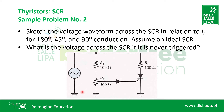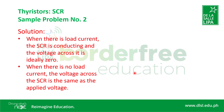For problem number two: sketch the voltage waveform across the SCR in relation to IL for 180 degrees, 45 degrees, and 90 degrees conduction. Assume an ideal SCR. An ideal SCR means that when the SCR is turned on, the voltage drop across it would be zero. Here is the solution.